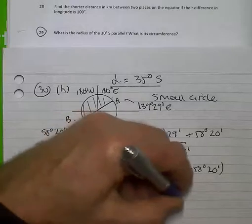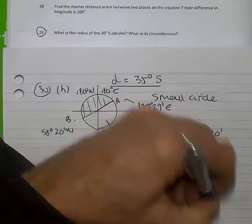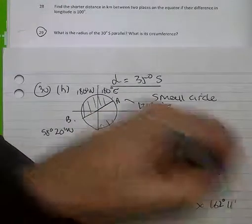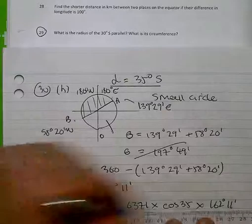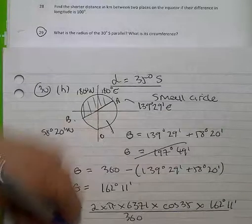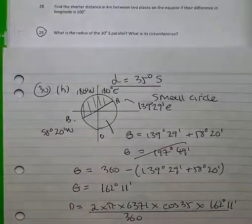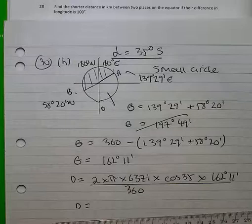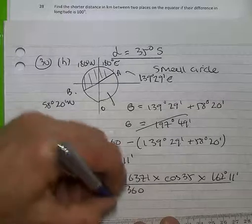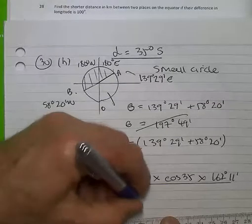Cosine of 35 times the 162 degrees 11 minutes over 360. And I should find an answer of the order of 14,772 kilometers.